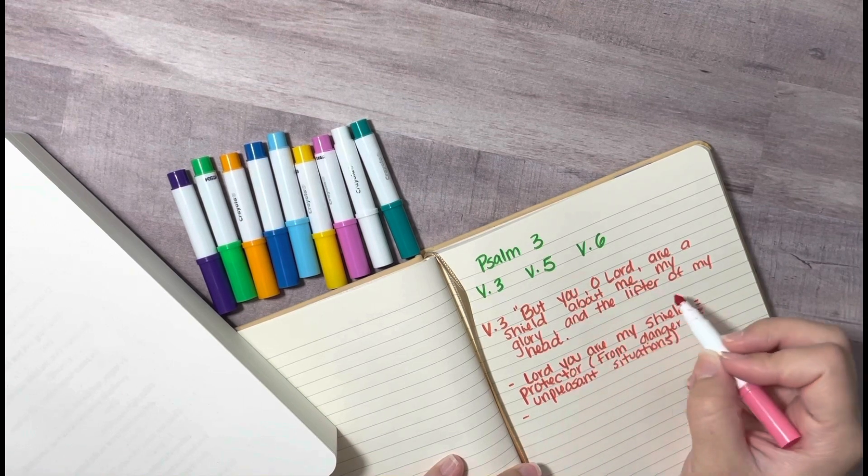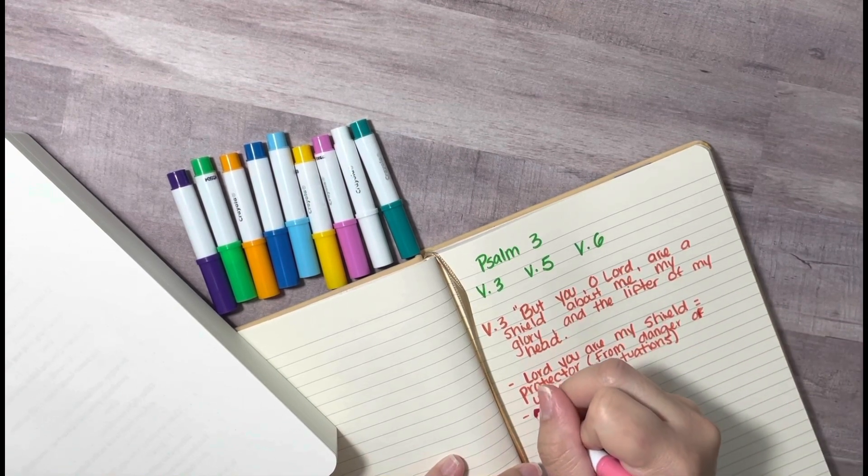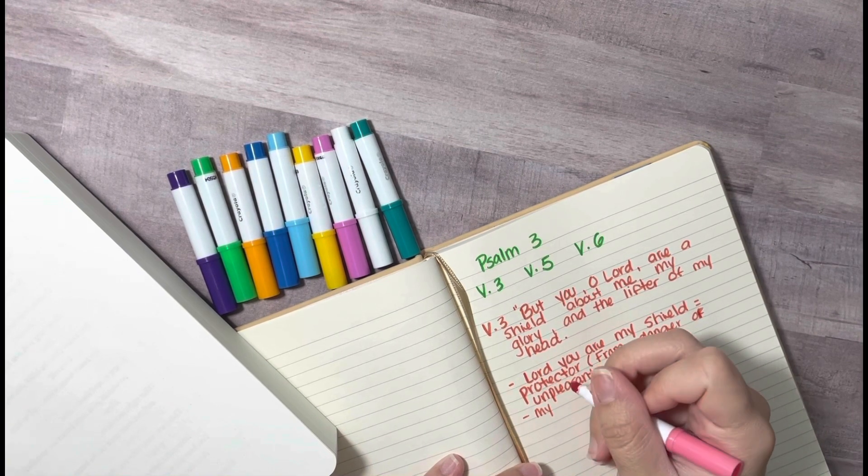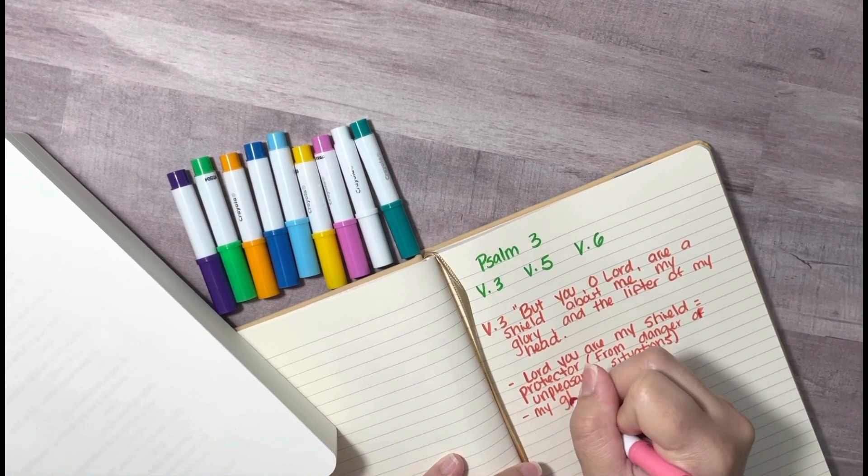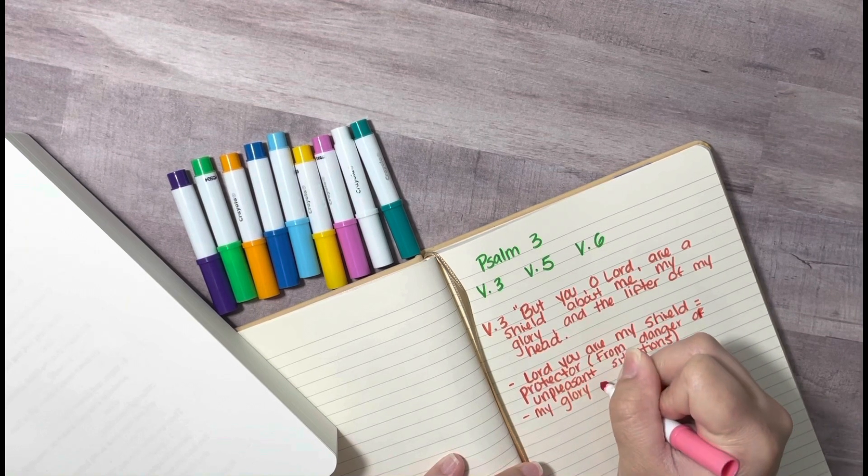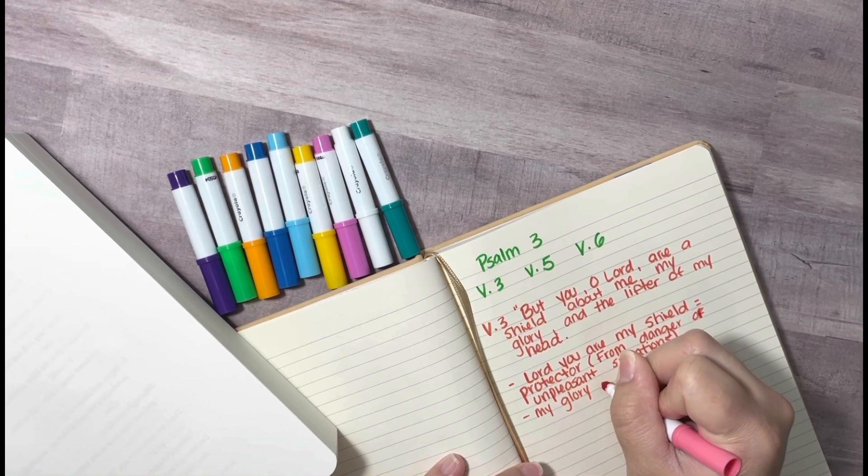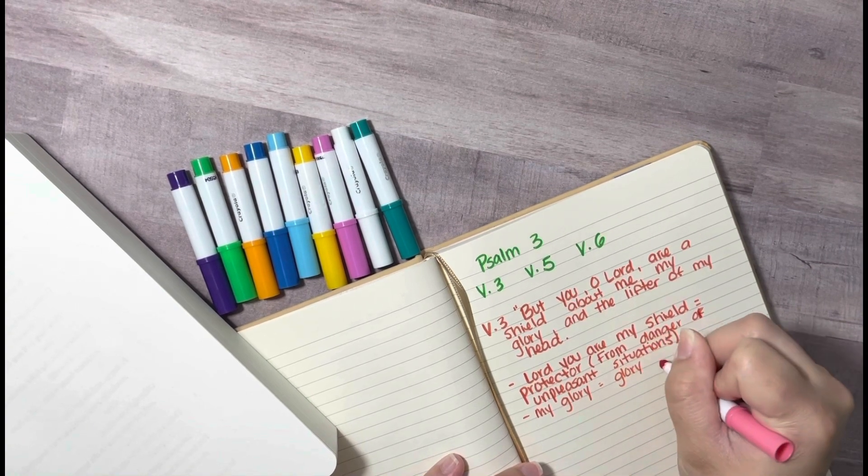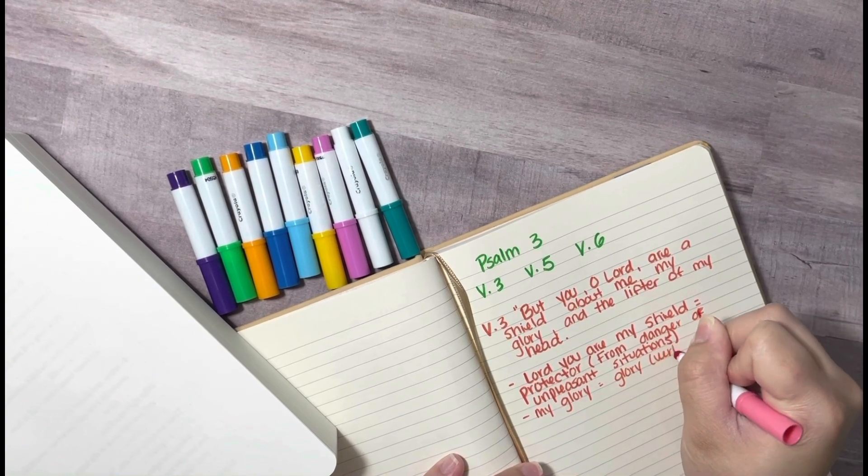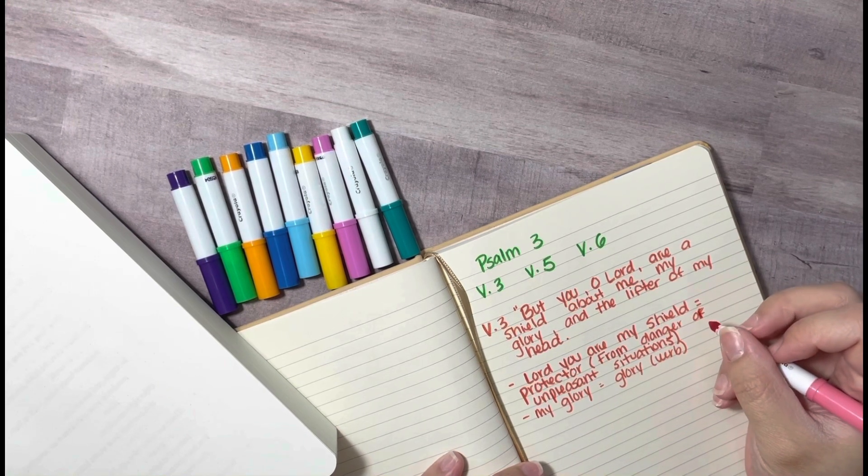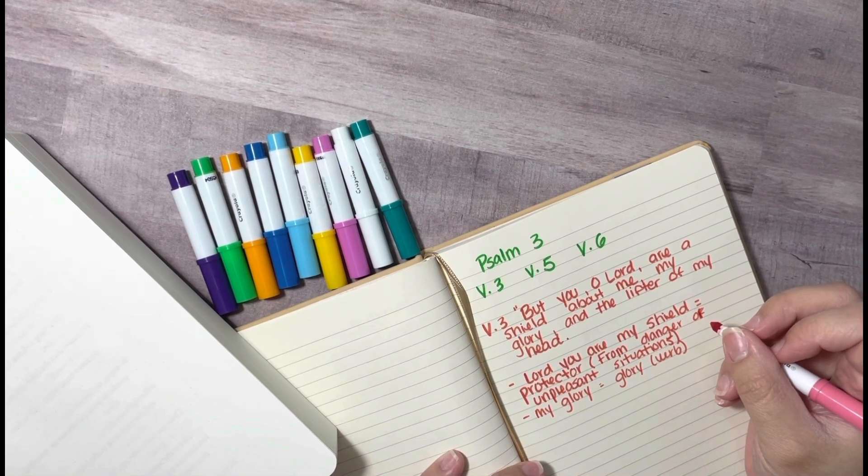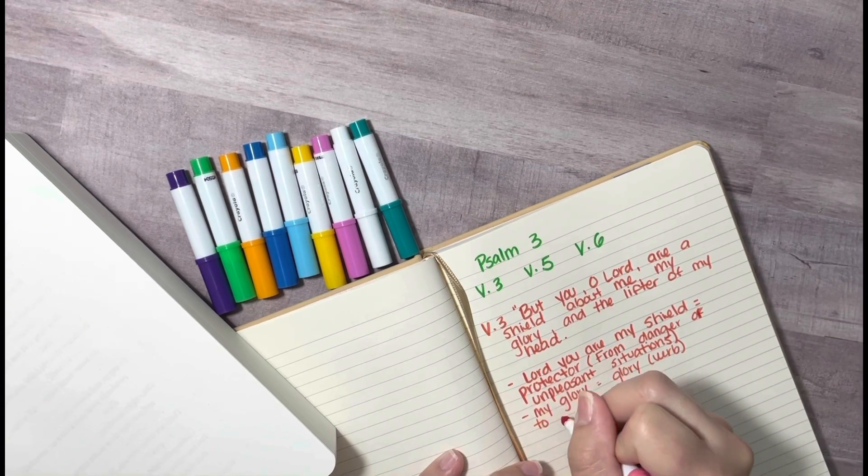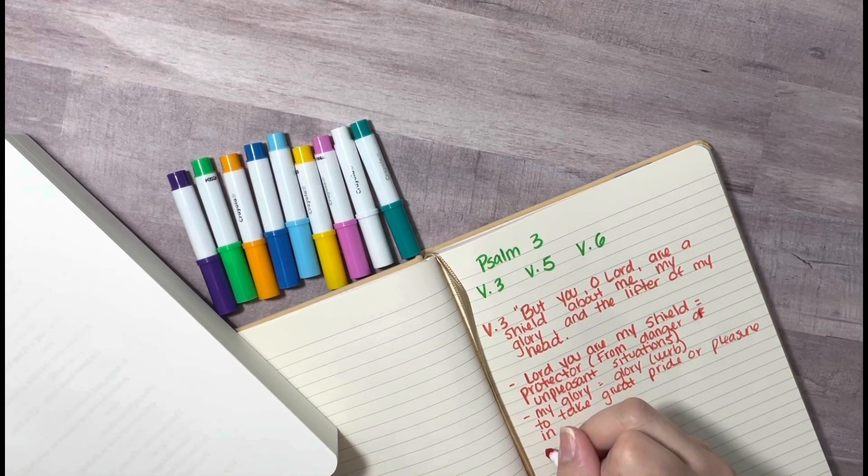I know that sometimes in life, we have many unpleasant situations, dangerous situations. And this psalm is saying, Lord, you are my protector from those unpleasant or dangerous situations. So the other part of this verse also says, my glory. Now, what could that mean? So I also took that to the dictionary. And glory as a verb can mean to take great pride or pleasure in. So I take great pride or pleasure in the Lord.